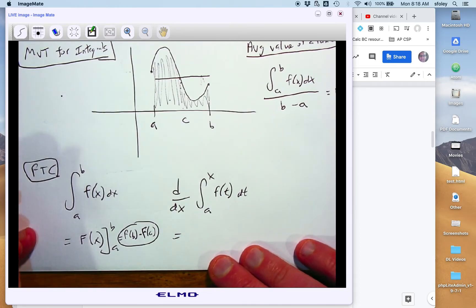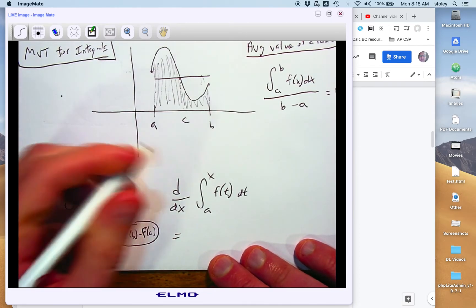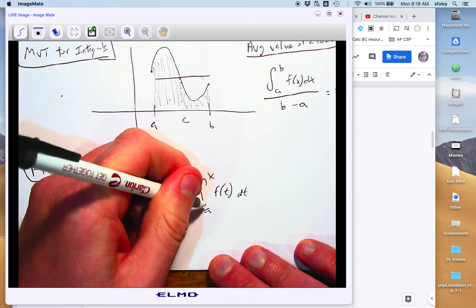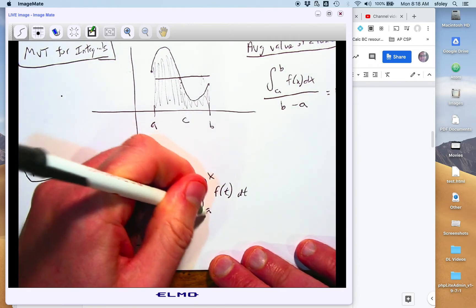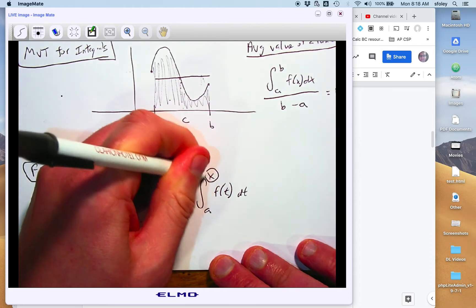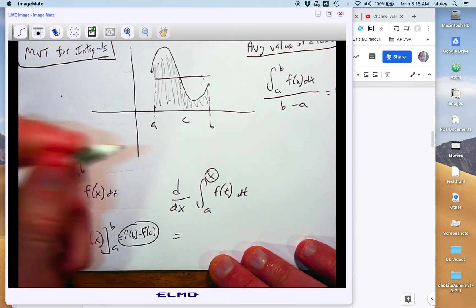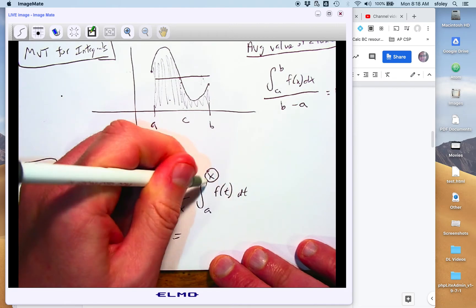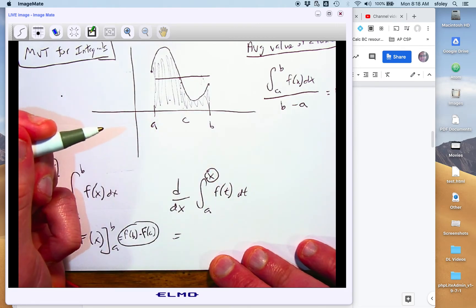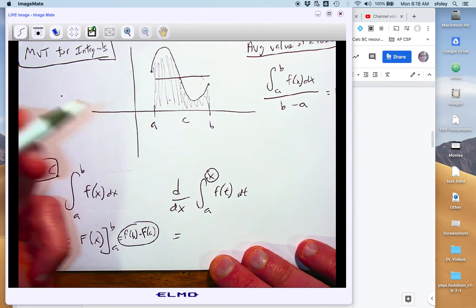The other one, which comes up fairly often but is sometimes a little harder to remember, it deals with these things called area functions. And so we've got an integral, but this time the variable of our area function is this upper bound of integration. And it turns out, of course, a big idea.